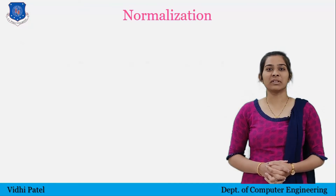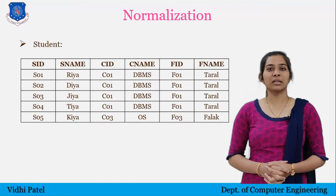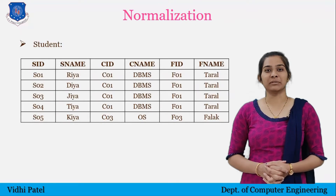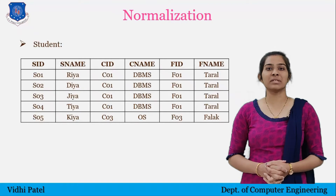Now let's talk about column level redundancy. Here you can see the example of the relation student. In this example, no row is exactly the same but columns are repeated — course ID, course name, faculty ID, and faculty name. We only have 5 values here, but in a real database there are thousands of records. If so many values in a column are the same, then it causes problems.